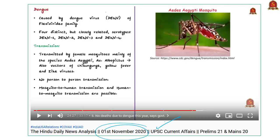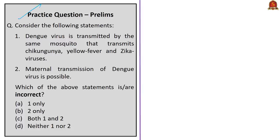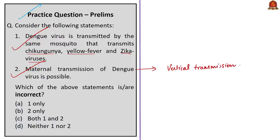Now attempt this question on Dengue virus. Statement 1: Dengue virus is transmitted by the same mosquito that transmits chikungunya, yellow fever and Zika viruses — this is correct, as Aedes aegypti is the vector for all these diseases. Statement 2: Maternal transmission of Dengue virus is possible — this is also correct. Maternal or vertical transmission means the virus is transmitted from a pregnant mother to her baby. Vertical transmission rates in Dengue are low but they exist, linked to the timing of infection during pregnancy. According to WHO, when a mother has Dengue infection during pregnancy, babies may suffer from preterm birth, low birth weight and fetal distress. Since both statements are correct but the question asks for incorrect statements, the answer is option D: neither one nor two.